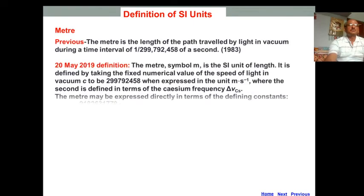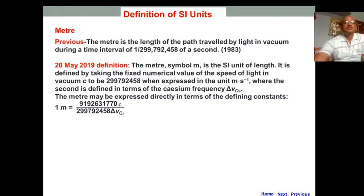Now, definition of SI units. See, first meter. Earlier, the meter was defined as the length of path traveled by light in vacuum during a time interval of 1/299,792,458 of a second. This definition was given in 1983, but there was a conference at BIPM on Meter's Day, that is 22nd May 2019.